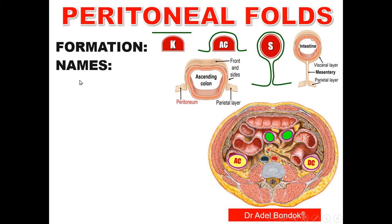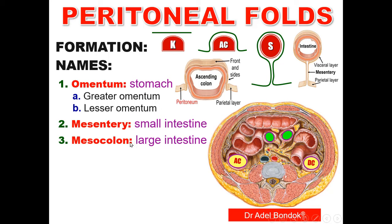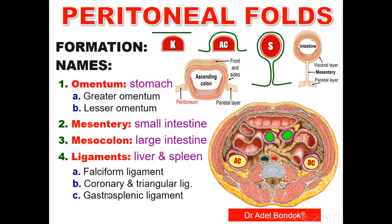Regarding the names: if the fold is attached to the stomach, it is called the omentum — like the lesser omentum and the greater omentum. If attached to the small intestine, it is called the mesentery. If attached to the colon, it is called the mesocolon. If attached to the liver and the spleen, it is called the ligament — like the falciform ligament between the liver and the anterior abdominal wall, coronary and triangular ligaments between the liver and the diaphragm, gastrosplenic ligament between the spleen and the stomach, and the lienorenal ligament between the spleen and the kidney.